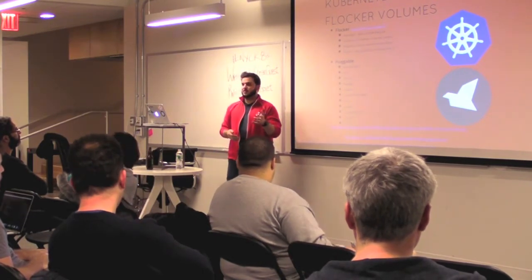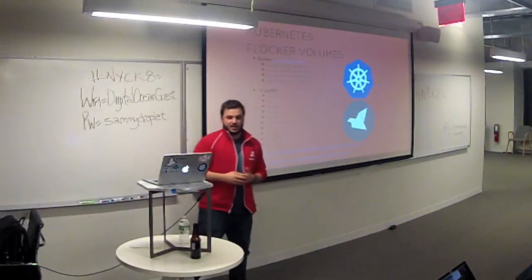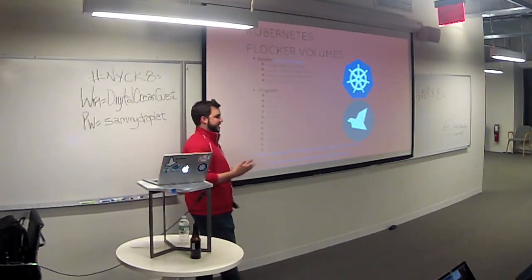Now I want to dig into what Flocker is. It is one of the options in Kubernetes when you want to use a volume for your pod. It's a data management and orchestration layer — more about automation. If you're familiar with provisioning iSCSI block devices, you need to provision it, specify options, attach it to whatever host you're running on, mount it, and put a file system on it. Those are operational tasks that add up at scale. We automate all of that and give you the options to do it at scale.